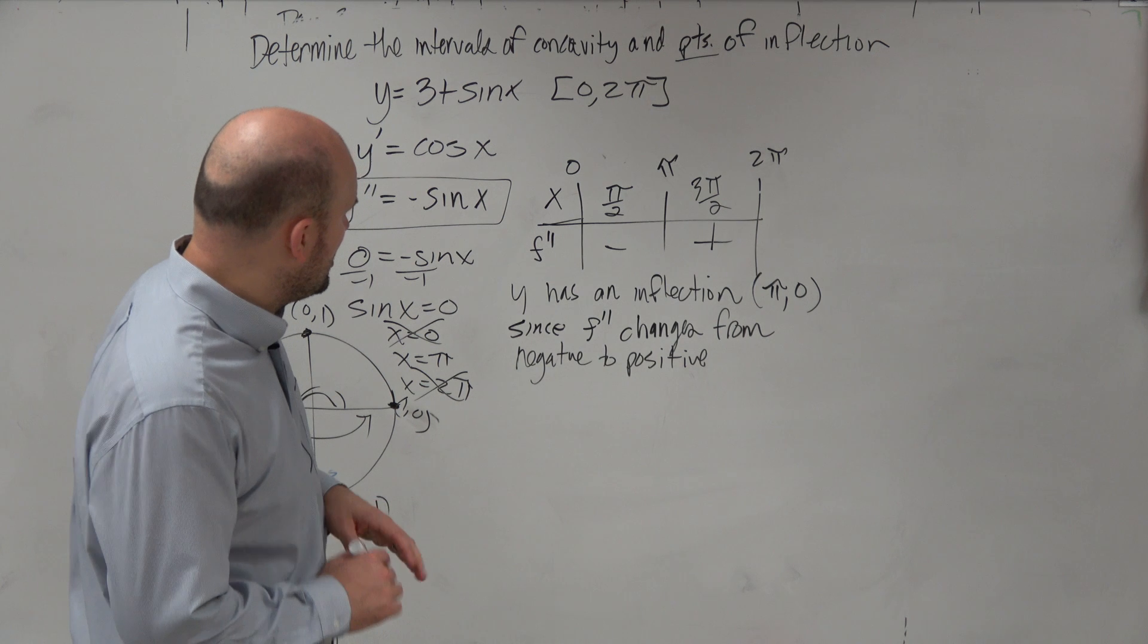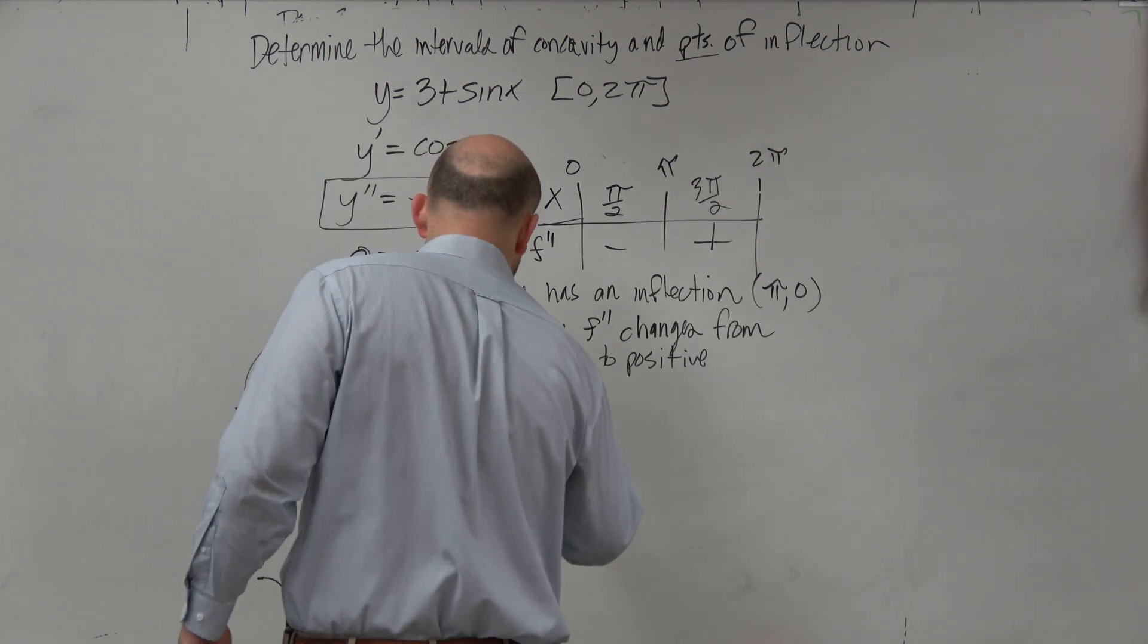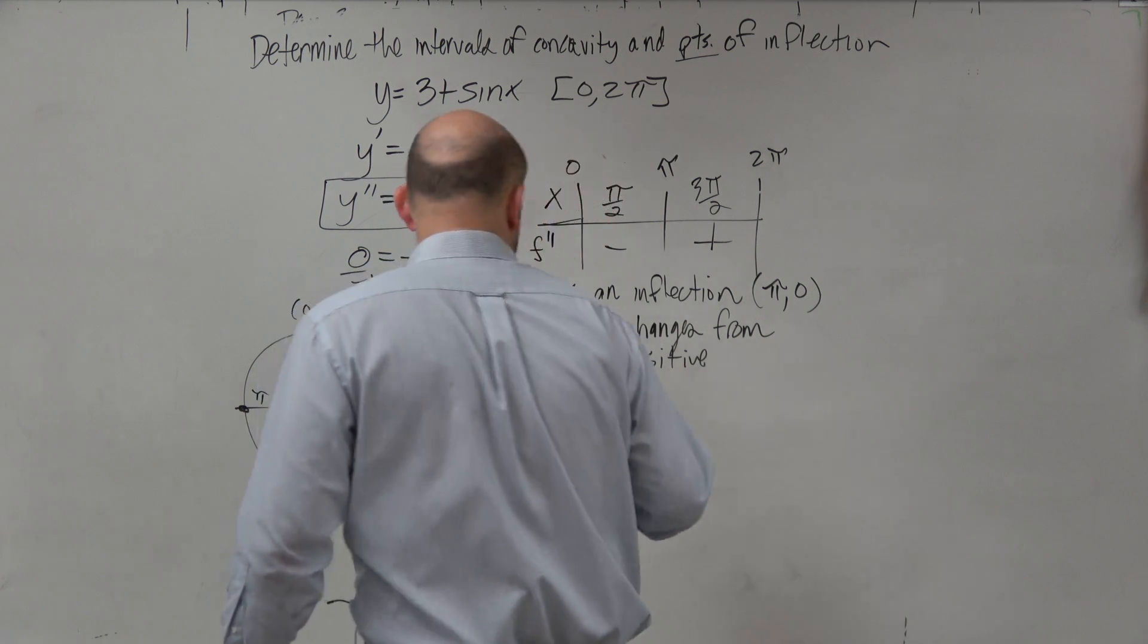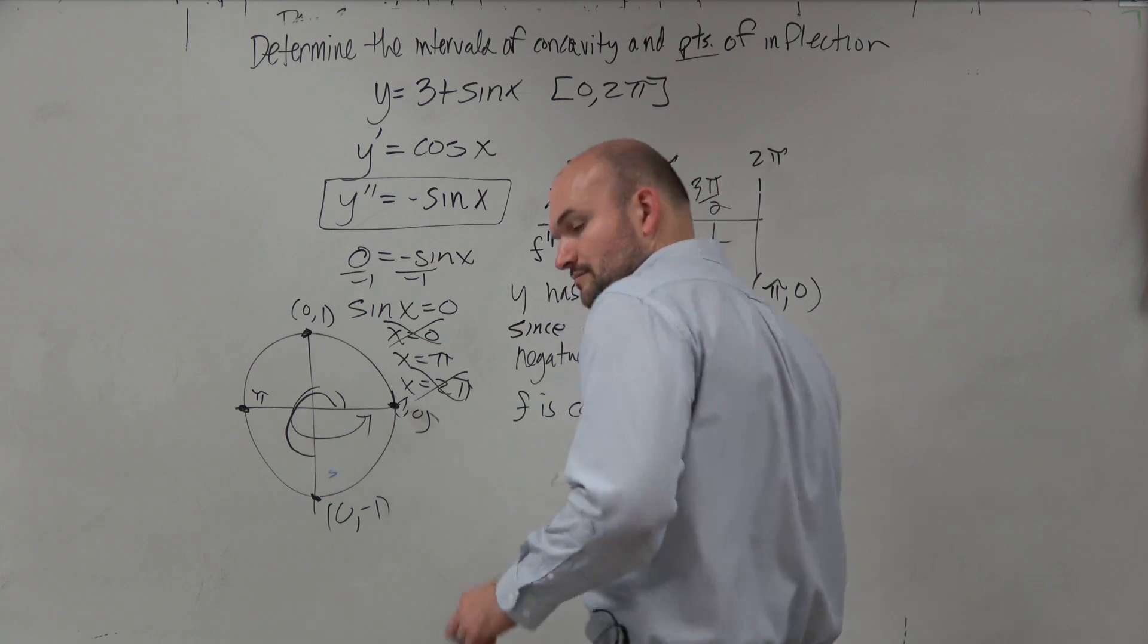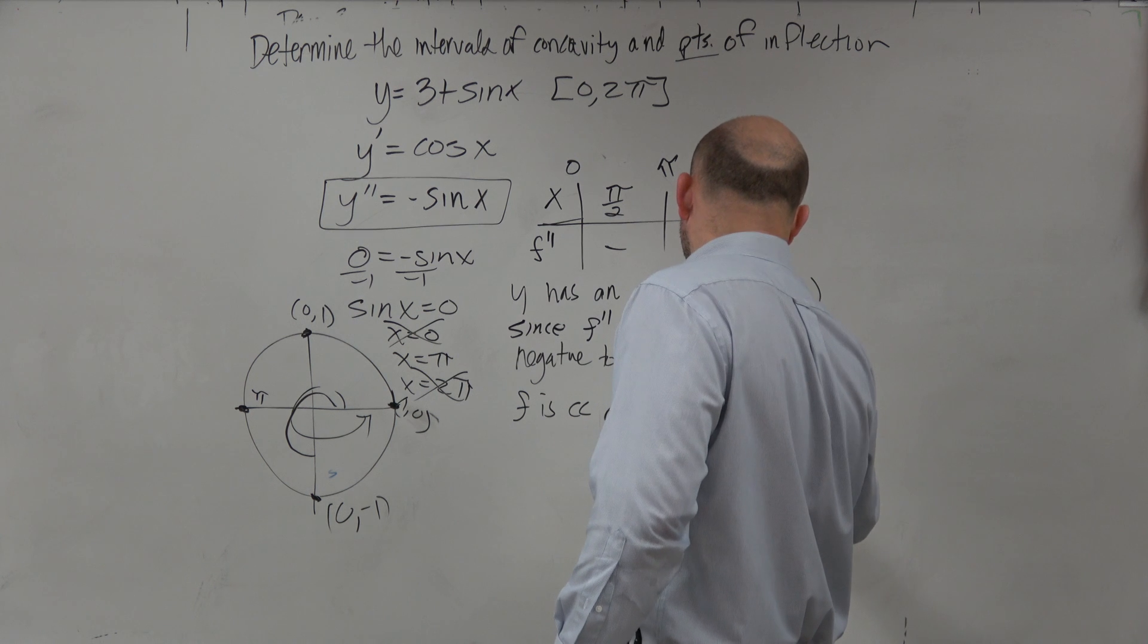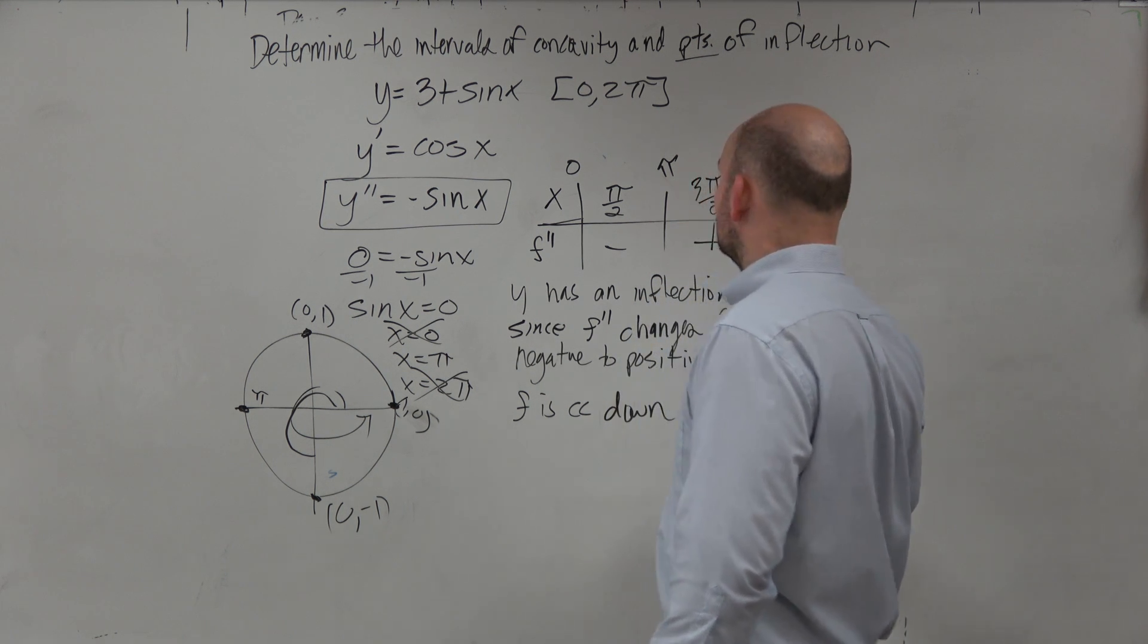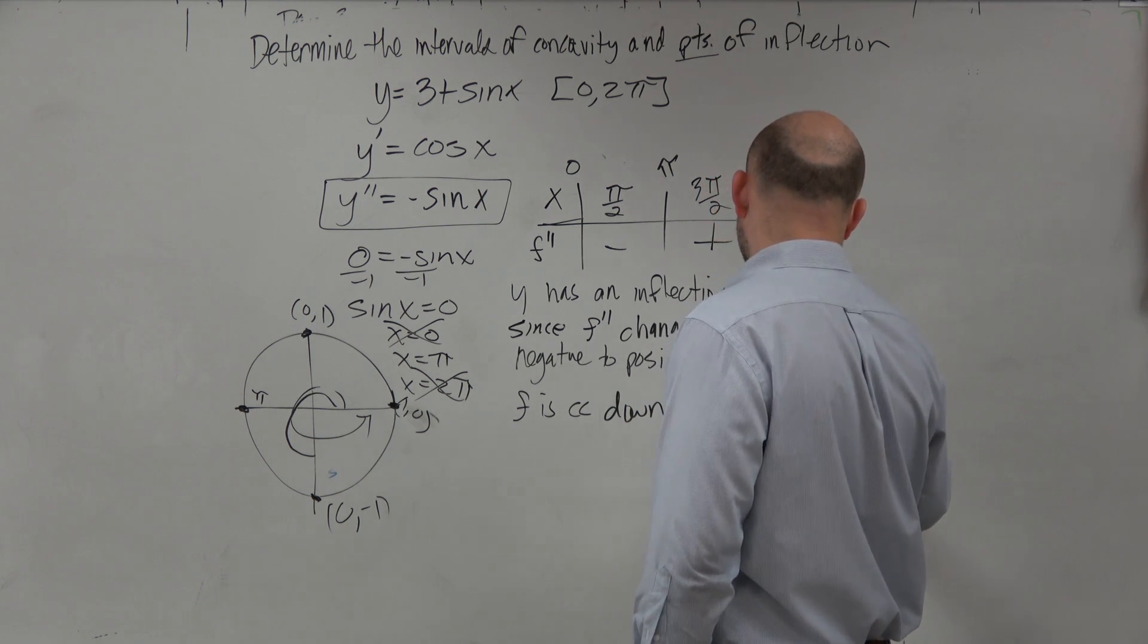You can't say the sign changes for the first derivative test, so why don't we just say exactly what it does? It's changing from negative to positive. And then we've got to look at our concavity. So we could say f is concave up. Now let's do down.